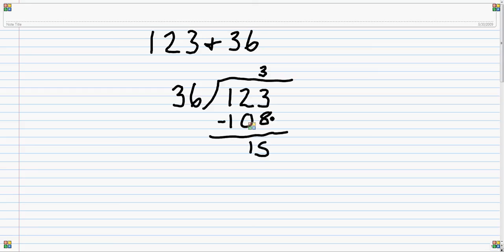Okay, now you keep doing this until you get a remainder of 0. But since I didn't, you can write out this equation if you want to. 123 equals 3 times 36 plus 15, right?